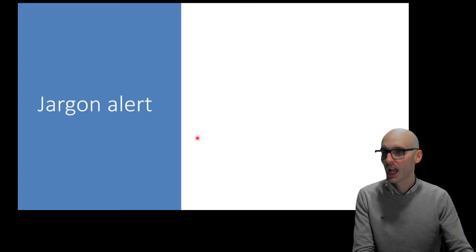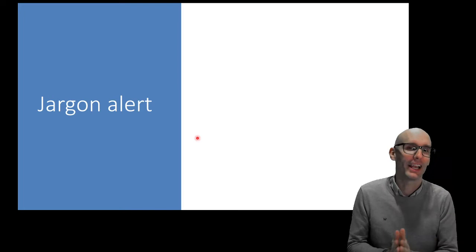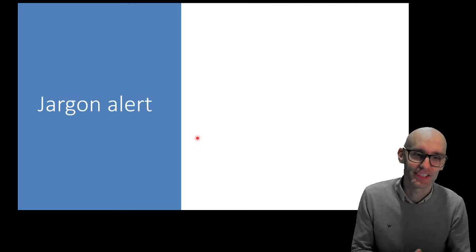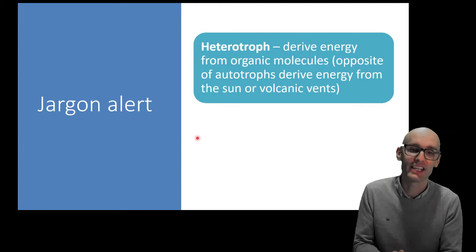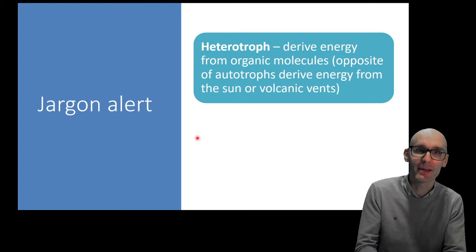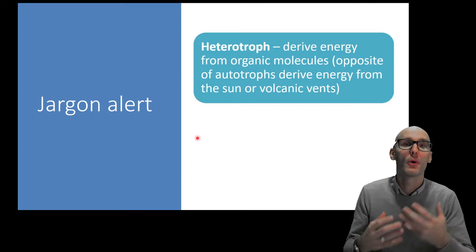There's going to be a lot of jargon in this video, so it's a bit of a jargon alert. You need to learn these terms so you can speak the language of microbiology. First up is heterotroph. Heterotrophs are a group of organisms that derive their energy from organic molecules. We're heterotrophs because we eat plants and animals and that gives us the energy to survive.